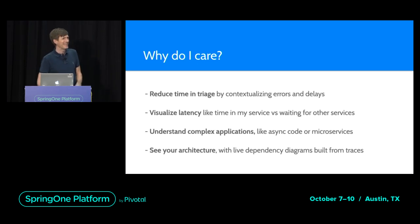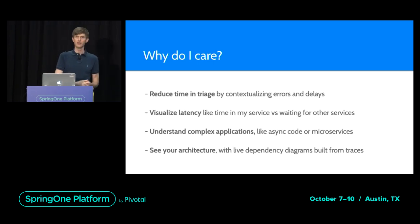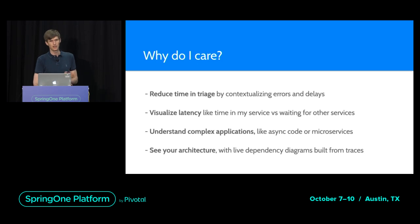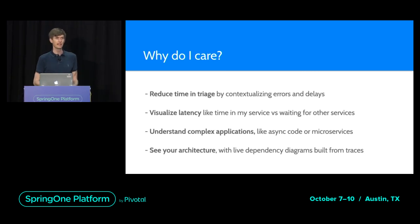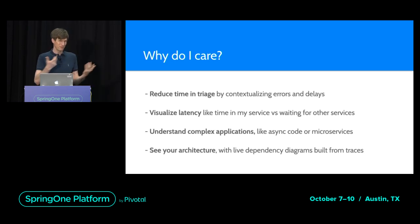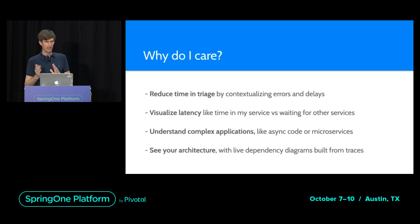People often think about tracing as hunting down long-tail latency, finding the slowest request. But what the broader community has said is the more important thing is productivity and understanding — reducing your time in triage, figuring out where to focus your assets when diagnosing a problem. Instead of blaming the database, you can actually tell whether it was the database or not, and that helps you focus.